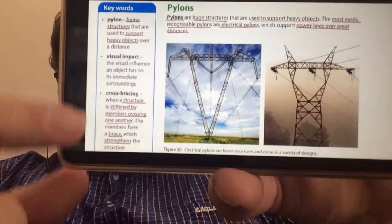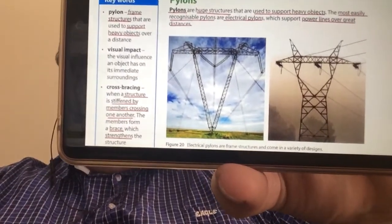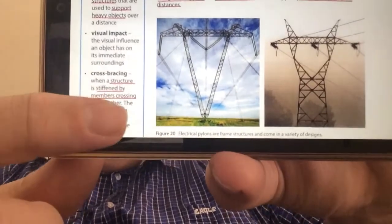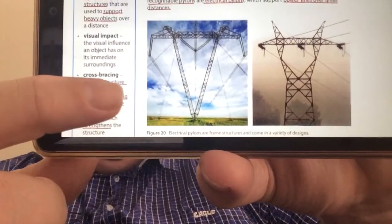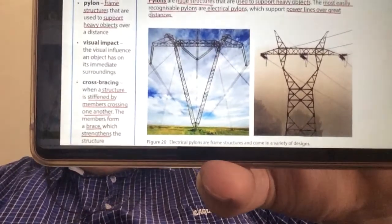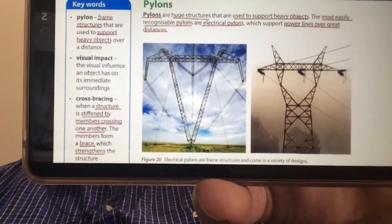So cross bracing is one of the examples where the little cross, the structure is stiffened by members crossing one another. And they form a brace which then strengthens this entire structure.